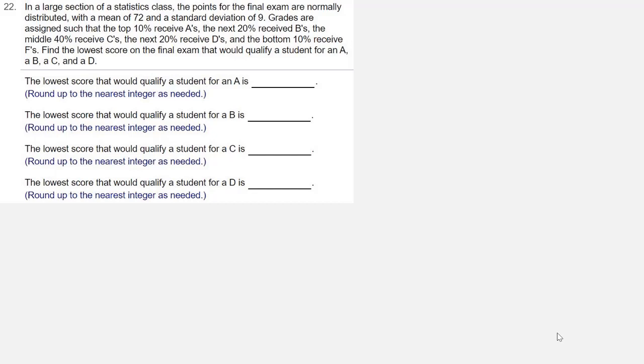Grades are assigned such that the top 10% receive As, the next 20% receive Bs, the middle 40% receive Cs, the next 20% receive Ds, and the bottom 10% receive Fs.